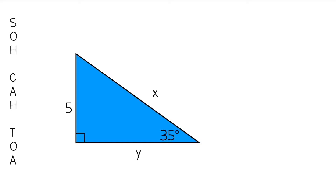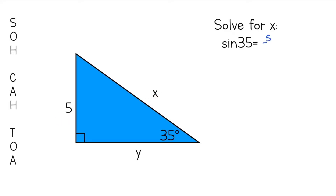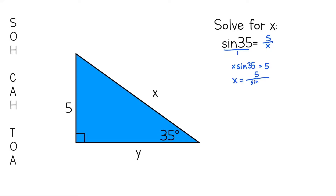Now let's look at this triangle where we're given one angle measure and a side length, and we need to solve for x. The angle is 35 degrees, the leg opposite of it is 5, and x is the hypotenuse. Sine uses the opposite leg and the hypotenuse, so sine of 35 equals 5 over x. Cross-multiplying — putting sine of 35 over 1 — gives x times sine 35 equals 5. Dividing both sides by sine 35, x equals 5 over sine 35. Plugging this into a calculator in degree mode gives x approximately 8.72.